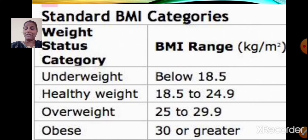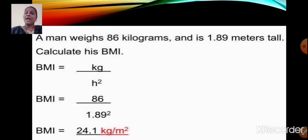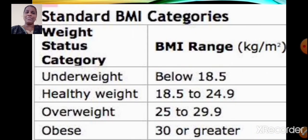If the BMI of a person is below 18.5, the person is underweight. If the BMI is between 18.5 to 24.9, the person is healthy. If the BMI is between 25 to 29.9, the person is overweight. And if the BMI is 30 or greater, the person is obese. Here is a question: a man weighs 86 kilograms and is 1.89 meters tall. When you calculate his BMI, you get 24.1, which means this person is nourished because his BMI falls between 18.5 to 24.9.